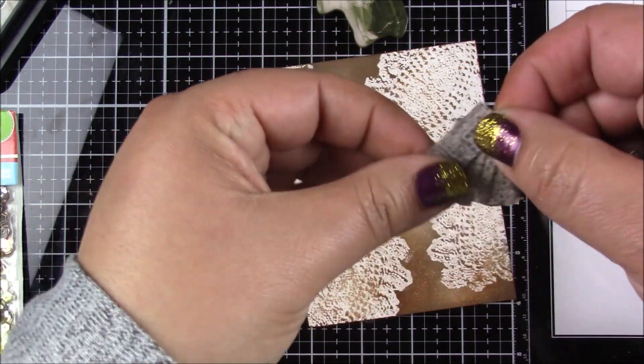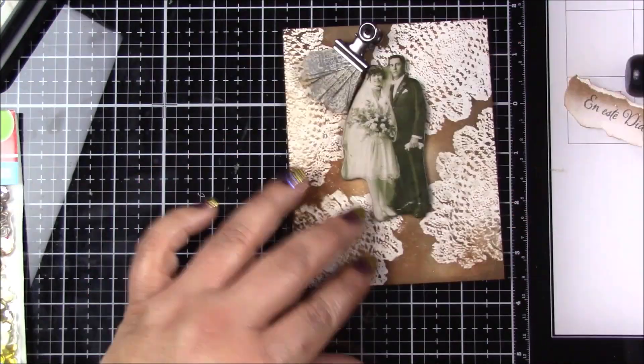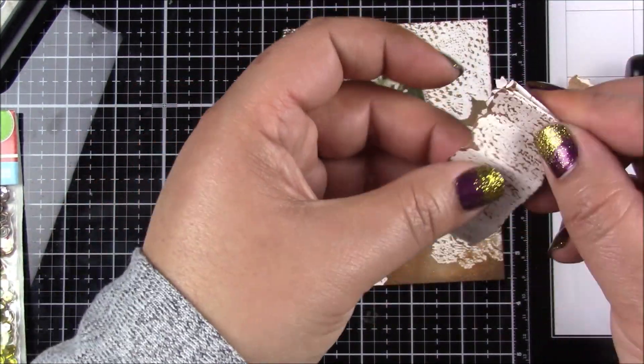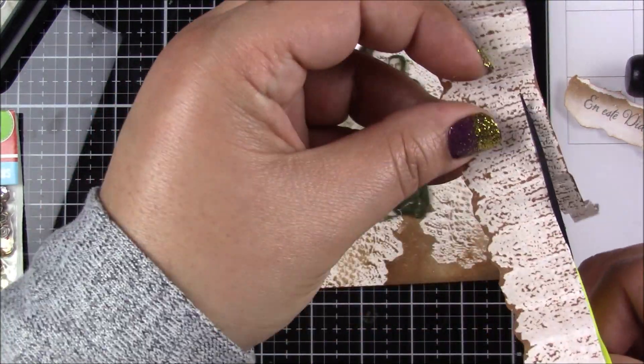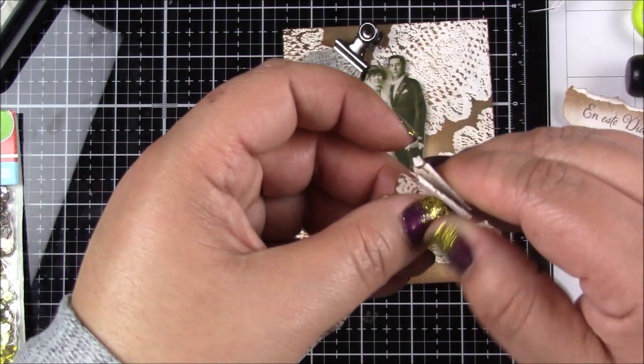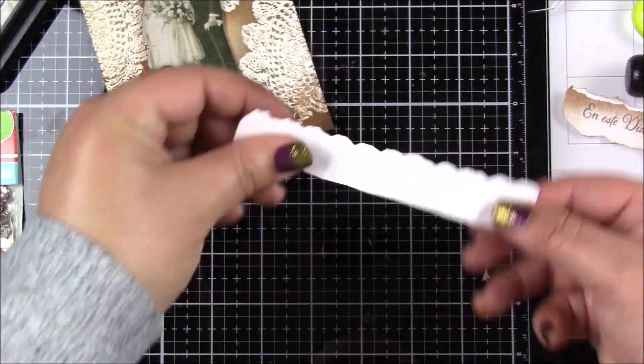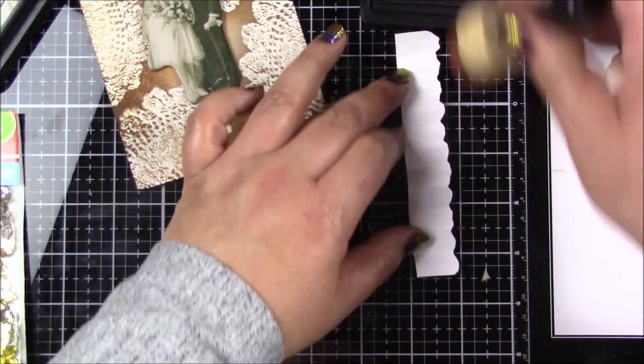I will tear that paper just to give it a more vintage, grungy look. Next, once you have cut the two strands of the other image, you will fold them like a little accordion like you see here. On this particular one you will cut about a quarter of an inch from the bottom.